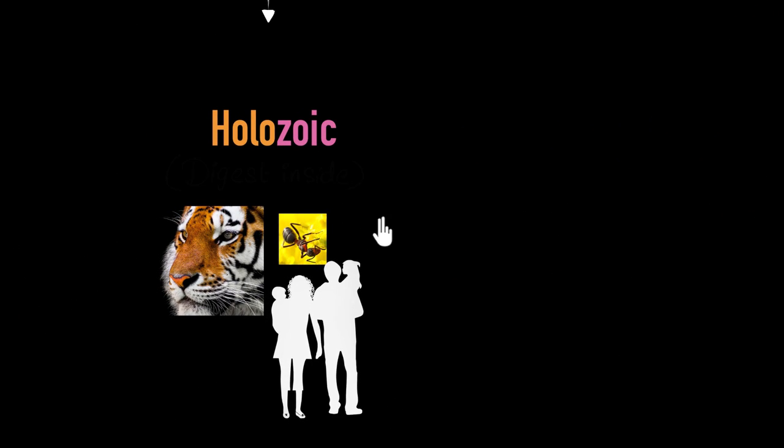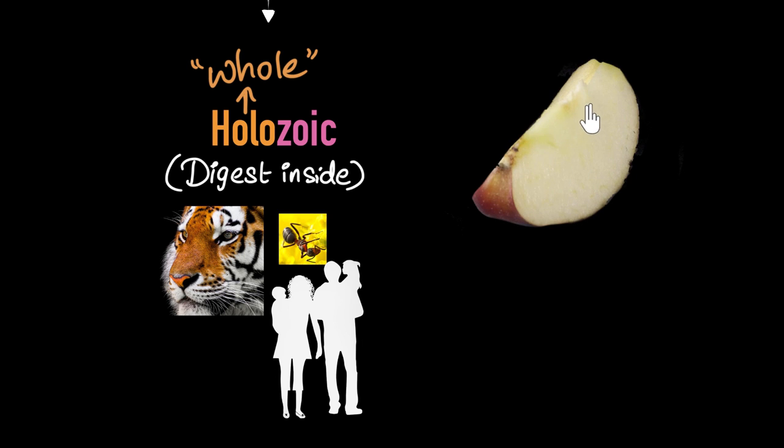Holozoic are consumers which digest their food inside of their body. You are holozoic. I am also holozoic. Most animals and insects, we are all holozoic because we eat and then the food gets digested inside our body. We are called so because the word holo means whole, in the sense we eat whole food. What does that mean? Take an example of an apple.